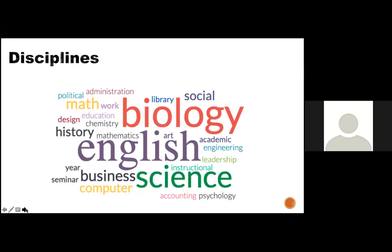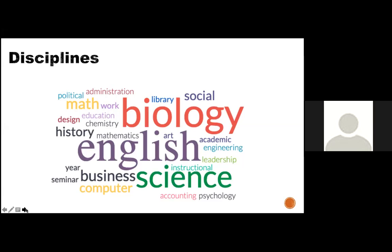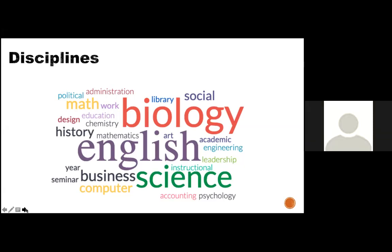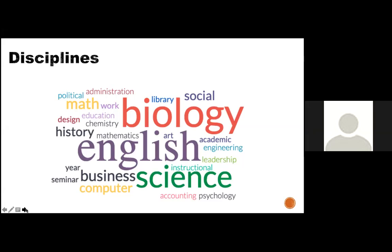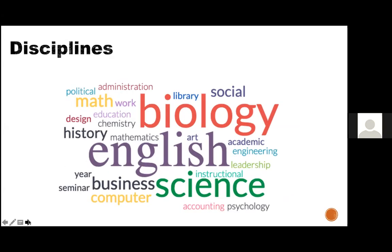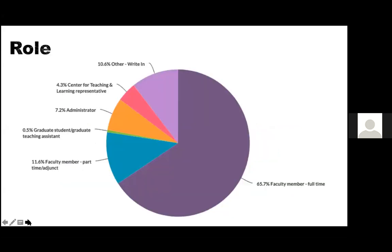I'm going to use my arrow so you don't have to hear my clicks on the recording. I took this data from the registration information Denise gave me about a week ago so I could know my audience, and I wanted to share that with you. Normally I would use a polling tool for this — if you're familiar with Zoom or Collaborate, both have polling options for synchronous delivery. Right here we see mostly biology, English, and science represented, and mostly full-time faculty members have registered.